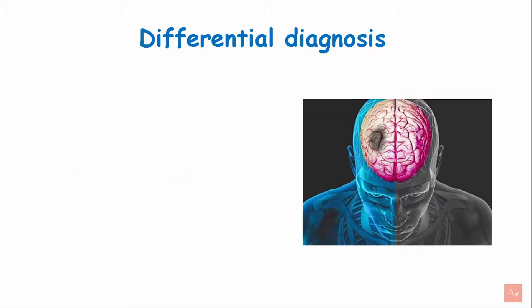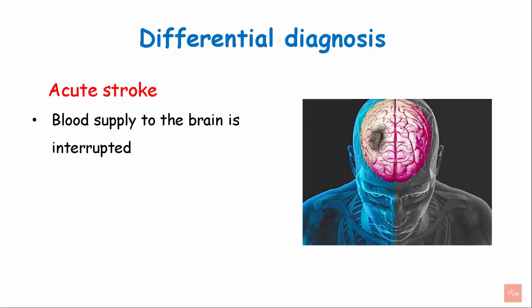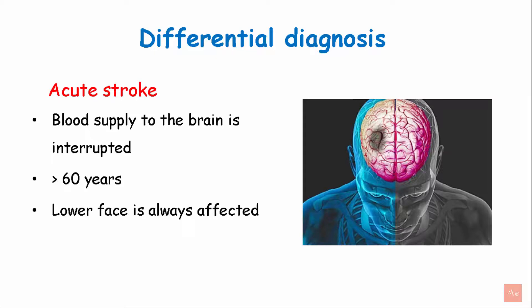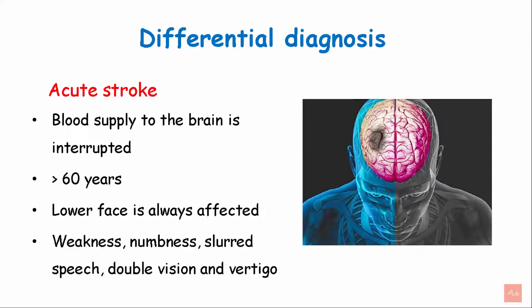The differential diagnosis for Bell's Palsy includes acute stroke, which is interrupted blood supply to the brain, mostly seen above 60 years of age. In acute stroke, only the lower face is affected, whereas in Bell's Palsy, both the upper and lower face are affected. Associated symptoms of acute stroke include weakness, numbness, slurred speech, double vision, and vertigo.